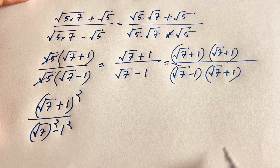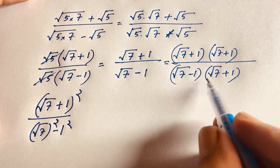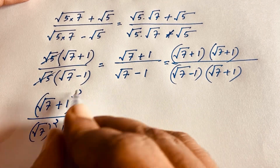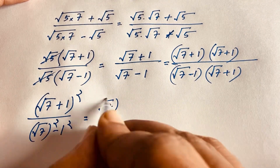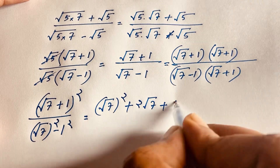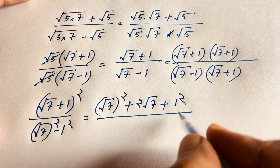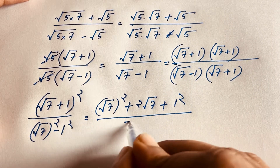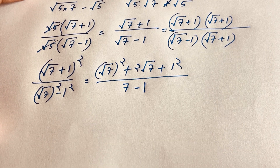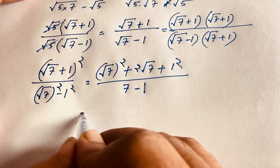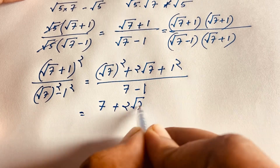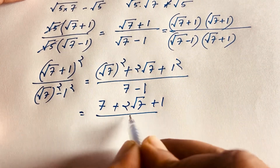We know that (a+b)² equals a² plus 2ab plus b². Applying this to the numerator, we get 7 plus 2 times square root of 7 plus 1. The square root of 7 squared cancels with 7 in the denominator leaving 2 square root of 7 plus 1, over 6.